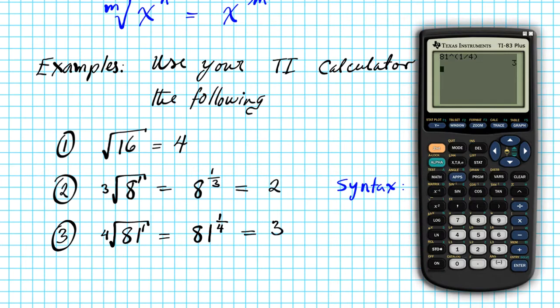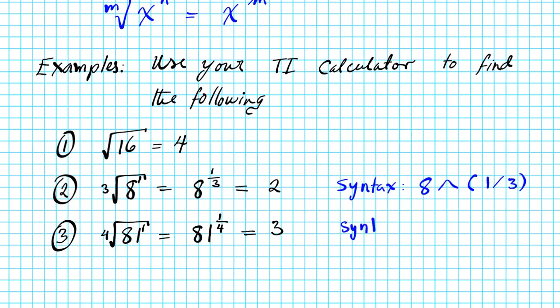So the syntax is the same as before. You just entered the base 81, caret takes you to the exponential field, and then you enter the fractional exponent. So caret, parenthesis, 1 divided by 4, and that will give you your answer.